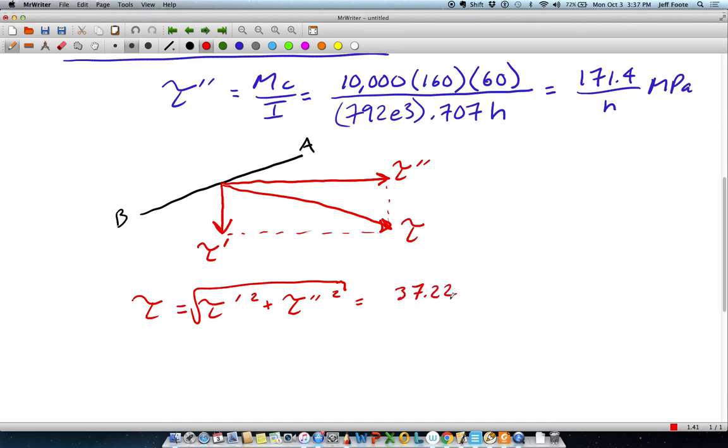So we've got 37.22 over H, quantity squared, plus 171.4 over H, quantity squared, rooted. And we can go ahead and run all the math inside, and we get 175.4 over H megapascals.